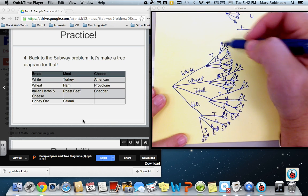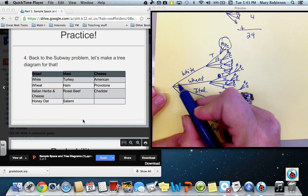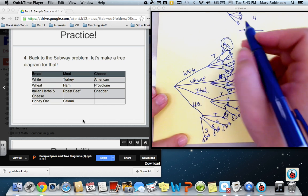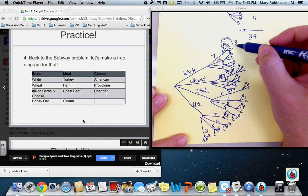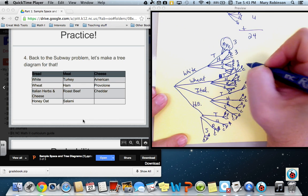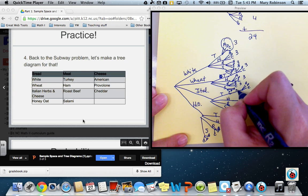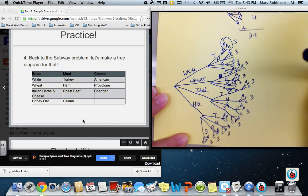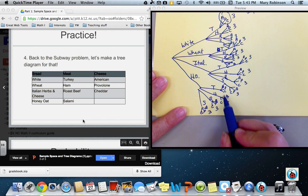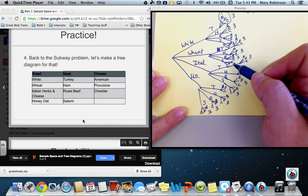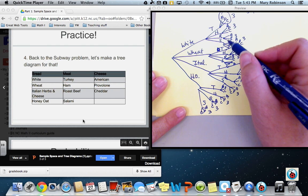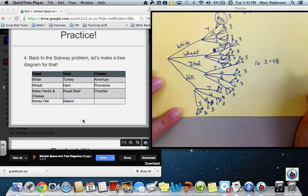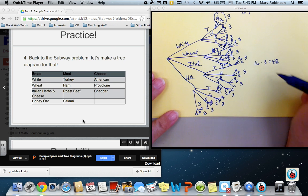And as you can see, I would count at the end. Here, this was, you could choose white turkey American, white turkey provolone, white turkey cheese. So this was actually three choices. So each one of these smaller branches is three. So I would write three for illustrative purposes and then count how many you had. So 1, 2, 3, 4, 5, 6, 7, 8, 9, 10, 11, 12, 13, 14, 15, 16.